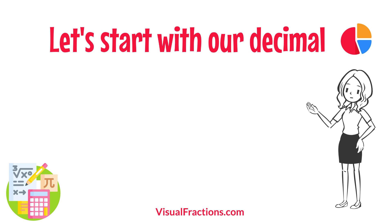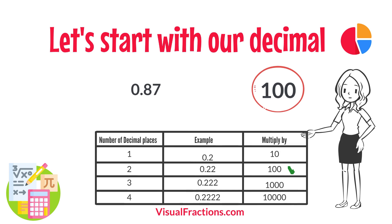Let's start with our decimal, 0.87. Notice there are two digits to the right of the decimal. This places it in the hundredths position.